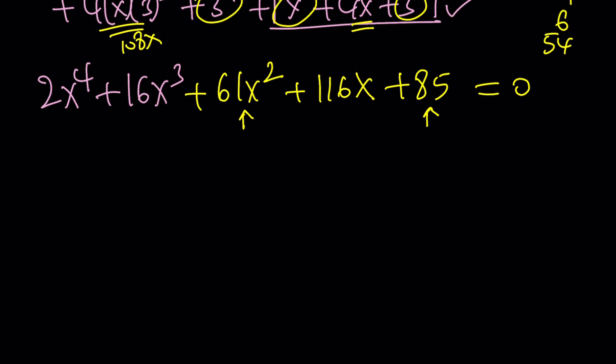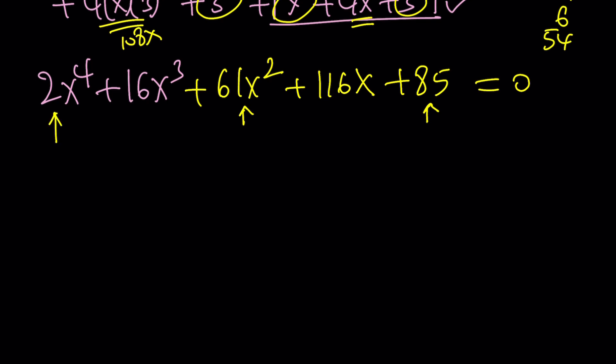Or another method is you can multiply everything by 8. And then try to make this. Actually, no. You can multiply by 4. And then this should give you (2x^2)^2. And you can try to make the left hand side a perfect square while also making the right hand side a perfect square. Yes, that can be done. But again, for people like me, people that are lazy, this is way too much work.